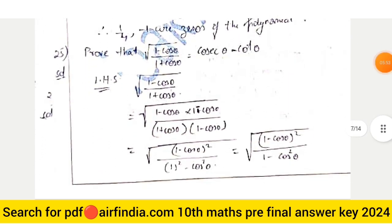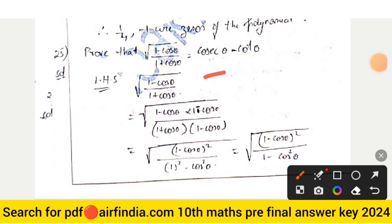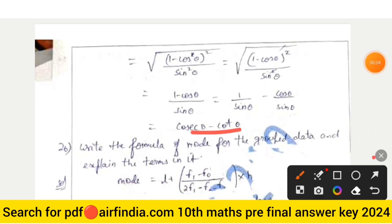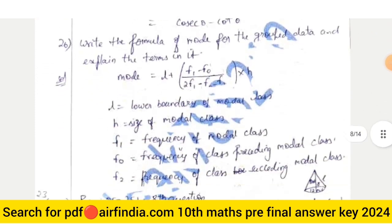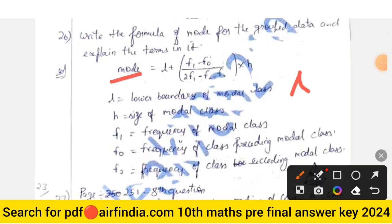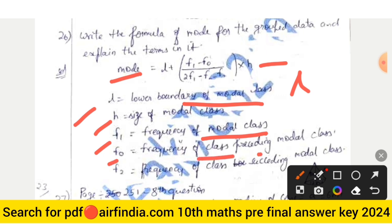Question 25 answer: prove that √((1 − cosθ)/(1 + cosθ)) = cosecθ − cotθ. Taking LHS and simplifying gives cosecθ − cotθ. Question 26 answer: the mode formula is Mode = L + [(F1 − F0)/(2F1 − F0 − F2)] × H, where L is the lower boundary of the modal class, H is the class size, F1 is the frequency of the modal class, F0 is the frequency of the class preceding the modal class, and F2 is the frequency of the class succeeding the modal class. Question 27: given diameter and curved surface area of cone = πRL.